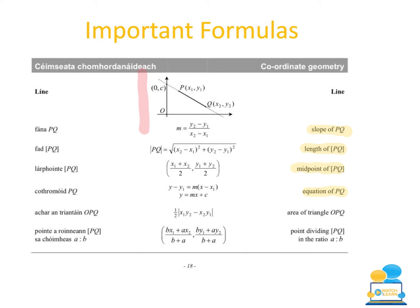Looking at our diagram, we can see a lot of important points. We have the point P which contains x1, y1 — x1 correlates to where it falls on the x-axis and y1 correlates to where it falls on the y-axis. Likewise, point Q is the point x2, y2. It's very important to remember that just like in our alphabet, x comes before y, so when writing down any point we always look at where it falls on the x-axis first. The point 0c represents where the line crosses the y-axis, which comes into play in one of our formulas later on.